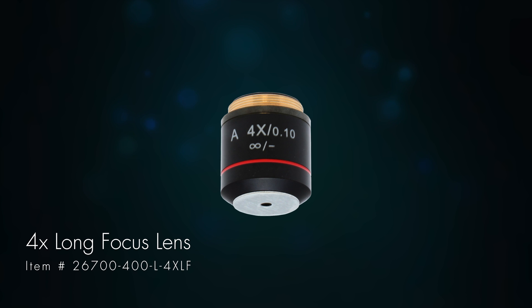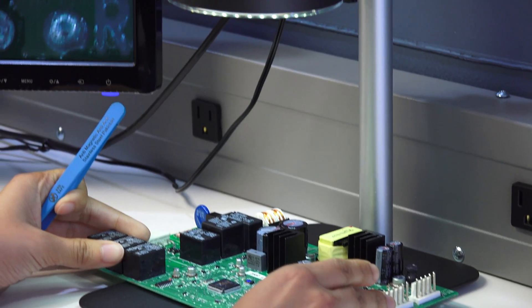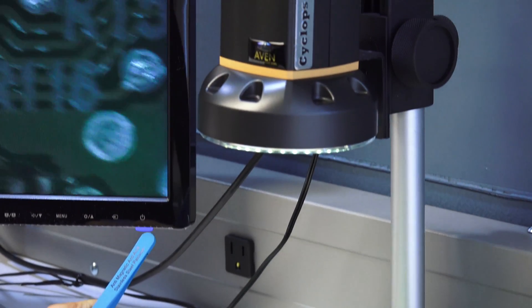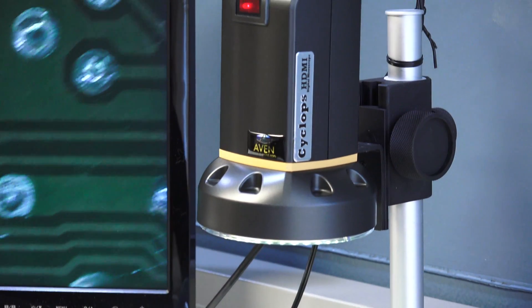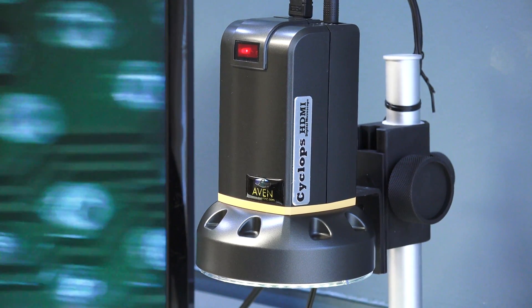If your inspection requires a larger working distance, consider the optional 4x long focus lens. While providing the same magnification range as the included lens, this option allows you to place the Cyclops body at higher positions along the stand.